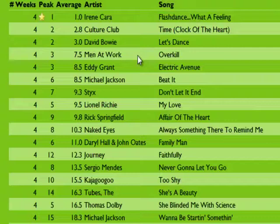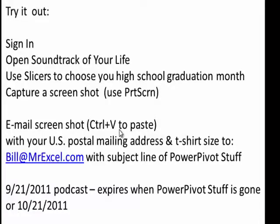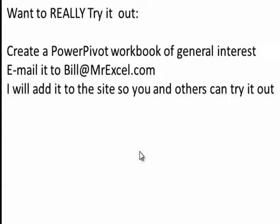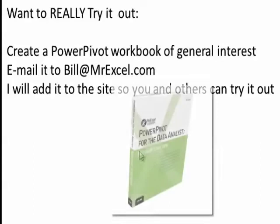Pull this up for your high school graduation, capture a screenshot — just use Print Screen — go to your email, Ctrl-V to paste it in, and send me your U.S. postal mailing address and t-shirt size to Bill at MrExcel.com with the subject line 'PowerPivot Stuff'. This expires a month from now or when the PowerPivot stuff is gone — September 21st. If you want to really try it out, create a PowerPivot workbook of anything — don't put confidential info in it — and email it to me. The first five people who send in a workbook get an autographed copy of PowerPivot for the Excel Data Analyst.